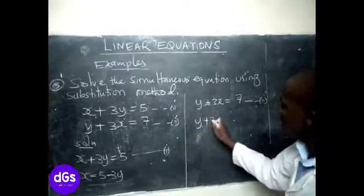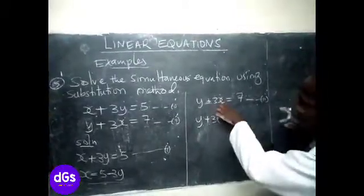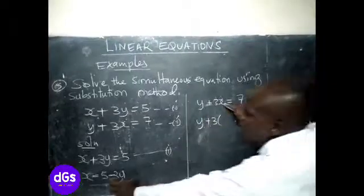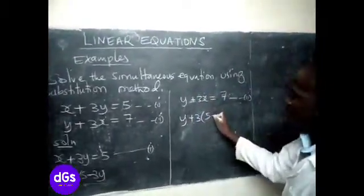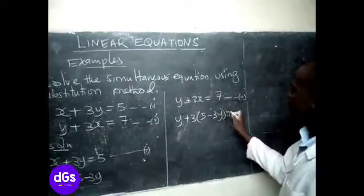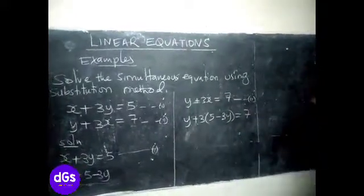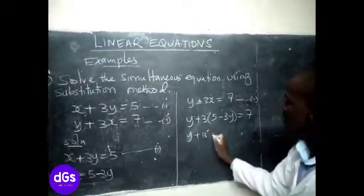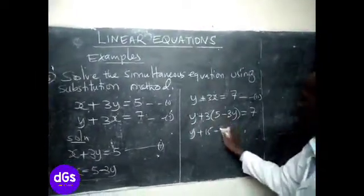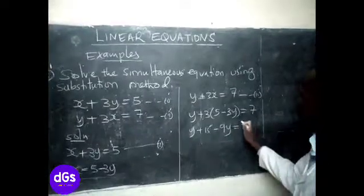So we shall have y plus 3. Now, instead of writing x, we put this one, because x equals to that. So it's 5 minus 3y, equals to 7. Let's open the brackets. Y plus 15 minus 9y equals to 7.